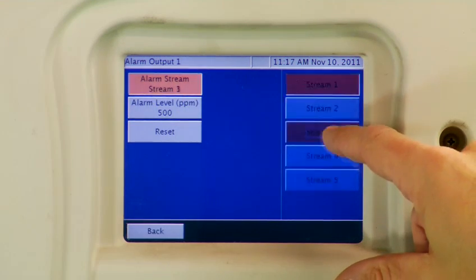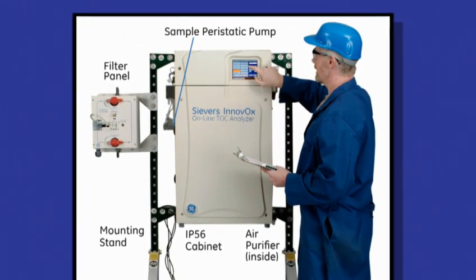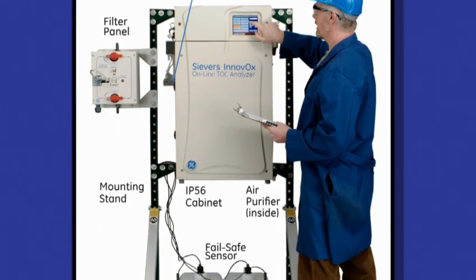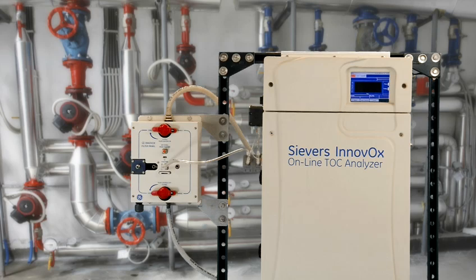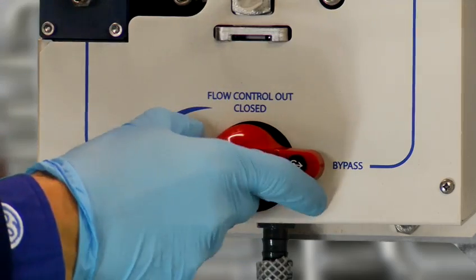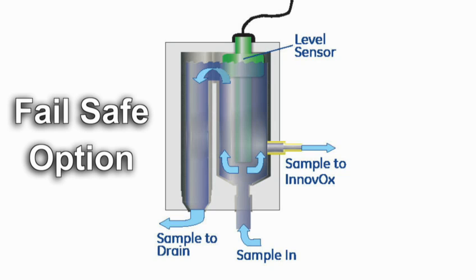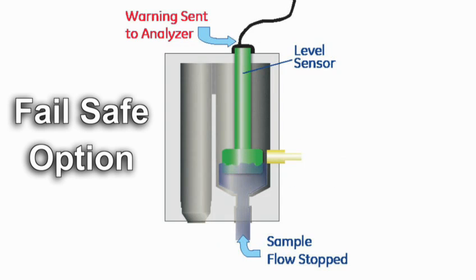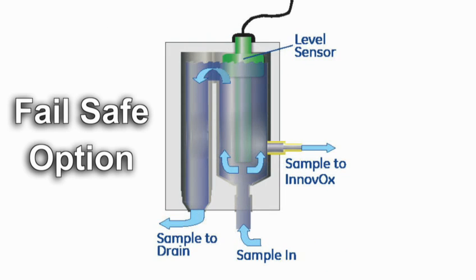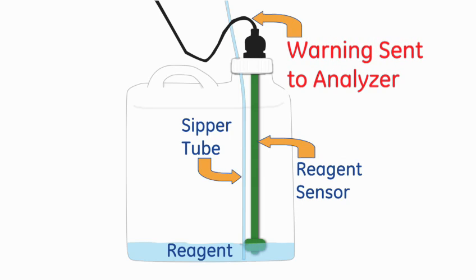You can configure relay alarms to communicate critical information. We understand that no two waste streams are the same, so we offer various accessories to customize the Innovox for your application. For applications that include suspended solids, the filter panel should be used — it removes large particles before sample analysis and is self-cleaning. The Failsafe option monitors the sample stream, placing the analyzer on standby when flow stops and automatically restarting it when flow resumes. It also monitors reagents, and if reagents are depleted, puts the Innovox on standby and alerts you that maintenance is needed.